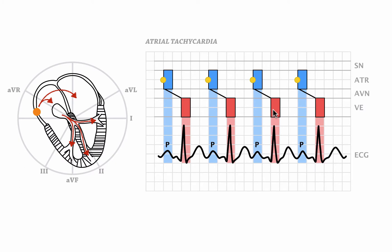As in sinus tachycardia, the impulse depolarizes the atria before it depolarizes the ventricles. However, due to the fact that this atrial focus can be situated anywhere in the atria, the atrial vector — the vector that points away from that focus — can point in almost any direction. So one important take-home message is that in atrial tachycardia, the P wave can be positive in leads 1 and 2, but it can also be negative. Most of the time, however, the P waves in atrial tachycardia are positive in leads 1 and 2.